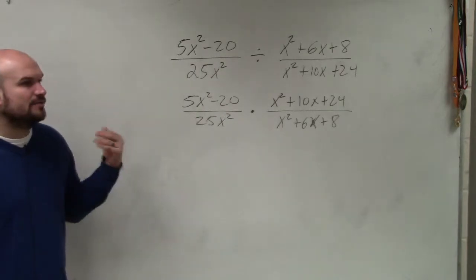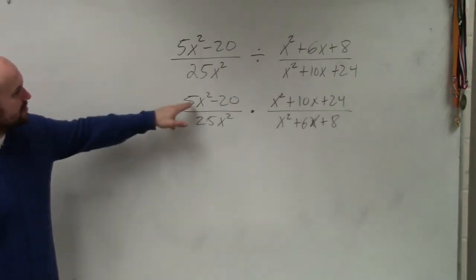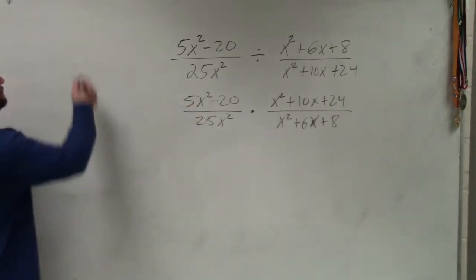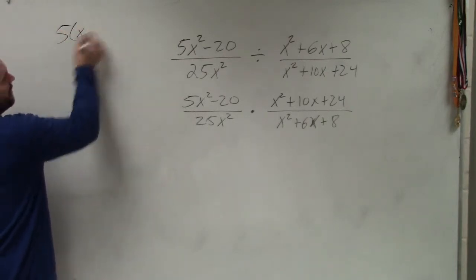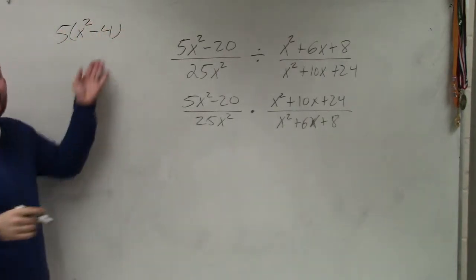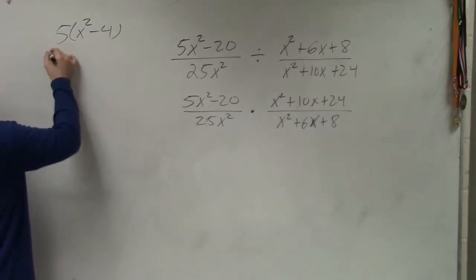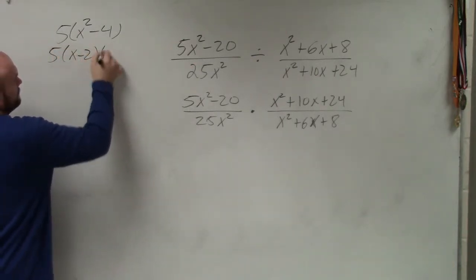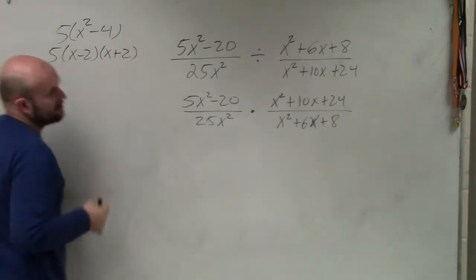So we look to every term and see what we can divide out for each term. Here, I can divide out a 5, right? So if I divide out a 5, I'm left with x² - 4, which again is a difference of two squares, which I can factor even further. Does everybody agree with me on that? Did everybody see that?